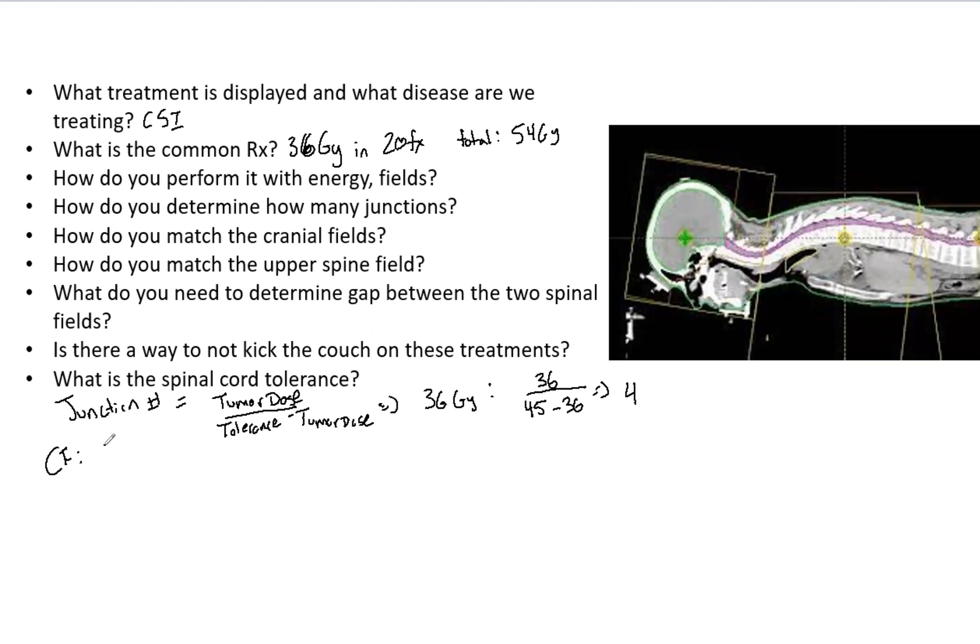Or what you can do is add a couch kick. The couch kick angle is going to be arc tan of the field divided by two, divided by the SAD, where F is the cranial field size. That matches the cranial fields to that upper spine field.